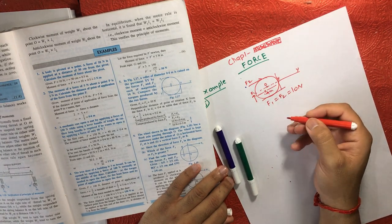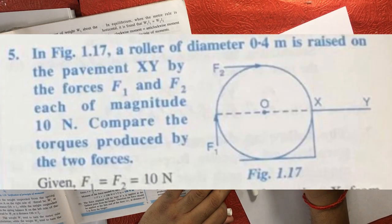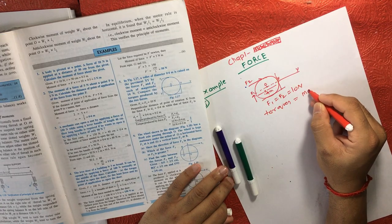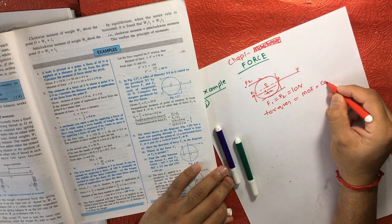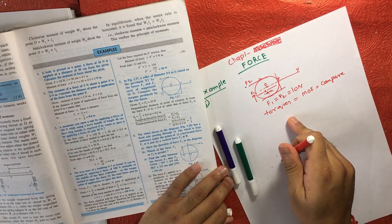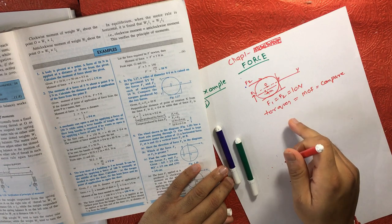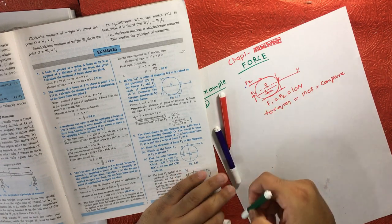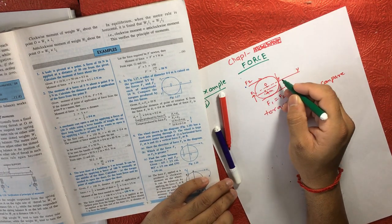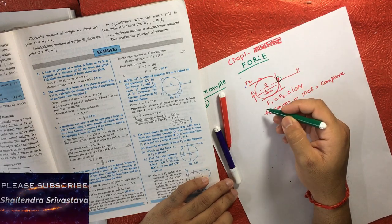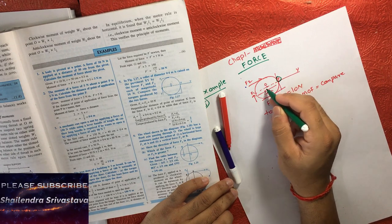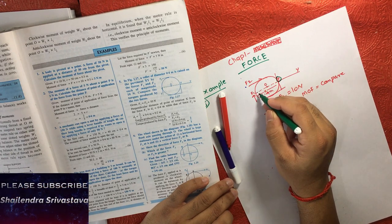Then we need to compare the torque—torque means moment of force. There must be some difference, that's why we are comparing. What is the difference? The difference is the perpendicular distance from point X for forces F1 and F2. The perpendicular distance for F1 is the complete diameter, so the distance will be 0.4 meter.